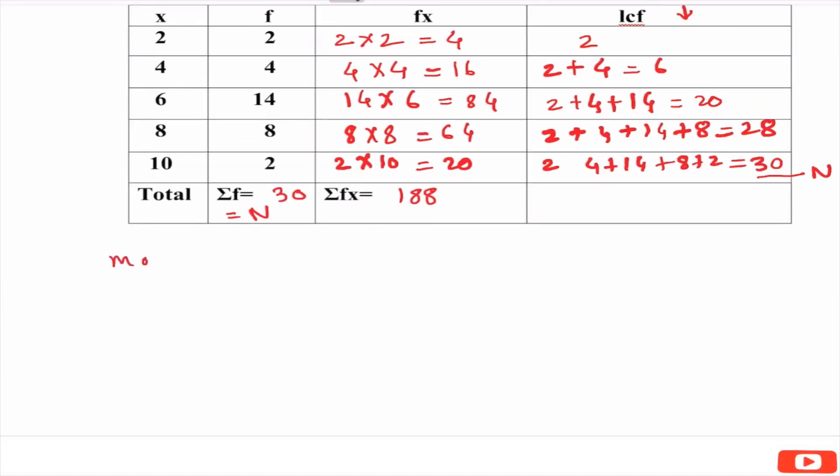Now, we will find mode. It is the observation with maximum frequency. Observations are x. Which is the observation with maximum frequency? 6 is the observation which has maximum frequency given as 14. So 6 is our mode. Again it has units, as units are not given we will just write units.